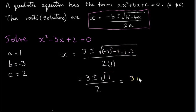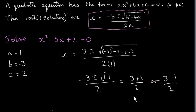So we end up getting 3 plus 1 over 2, or 3 minus 1 over 2. The square root of 1 is 1. The plus or minus means we have two answers — two solutions to the quadratic equation. If we take the plus sign, we get 3 plus 1 over 2, which is 4 divided by 2, which is 2. If we take the minus sign, we have 3 minus 1, which is 2, and 2 divided by 2 is 1. So x equals 2 or x equals 1 are the roots or solutions.